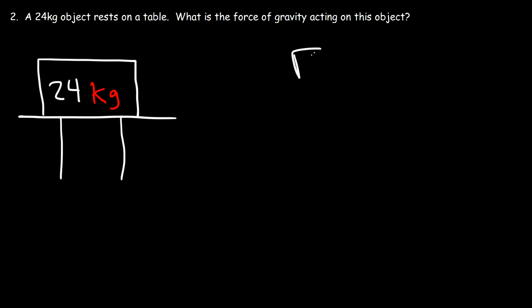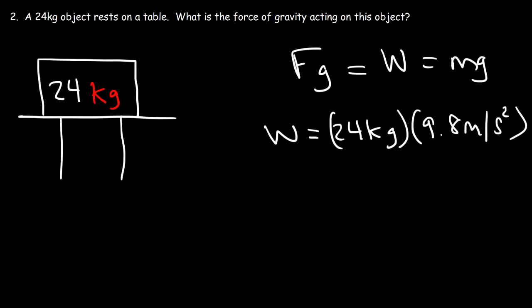The force of gravity acting on the object is basically the weight force. So it's mg. So it's going to be 24 kilograms times an acceleration of 9.8 meters per second squared. So the weight force is 235.2 Newtons.